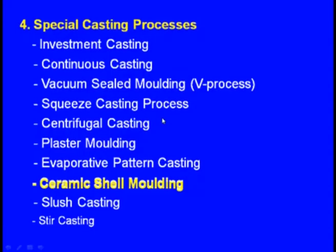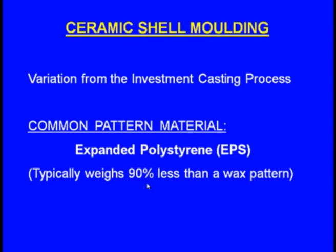Next, let us see ceramic shell molding. This ceramic shell molding is almost similar to investment casting but with a little difference. The common pattern material is expanded polystyrene, also known as EPS. Most importantly, its weight is very less — 90 percent less than a wax pattern. That is one good advantage of this process.